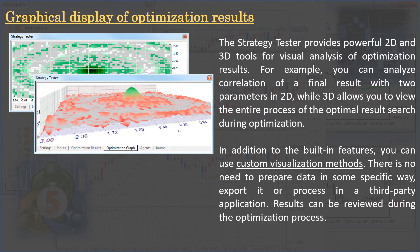The Strategy Tester provides powerful 2D and 3D tools for visual analysis of optimization results. For example, you can analyze the correlation of a final result with two parameters in 2D, while 3D allows you to view the entire process of optimal result search during optimization. In addition to the built-in features, you can use custom visualization methods. There is no need to prepare data in any specific way, export it, or process it in a third-party application. Results can be reviewed during the optimization process itself.